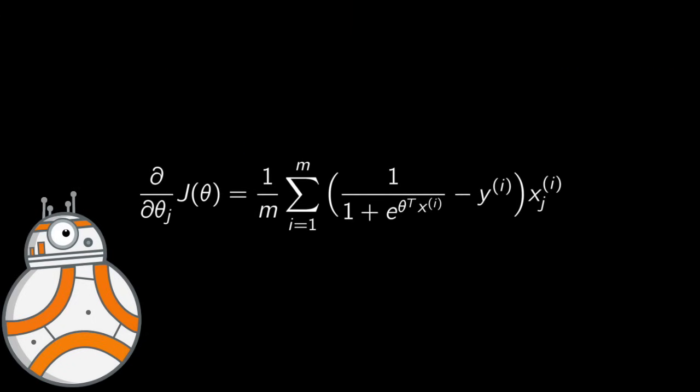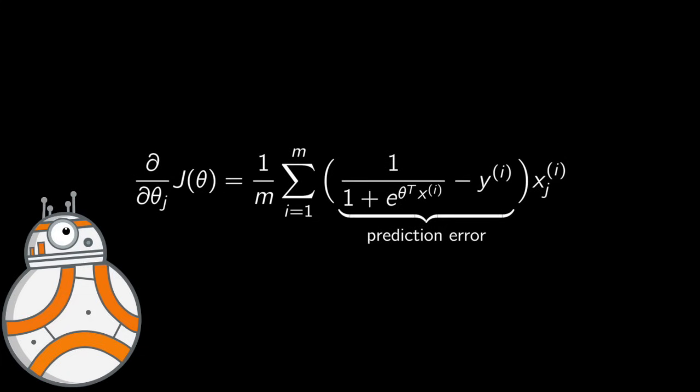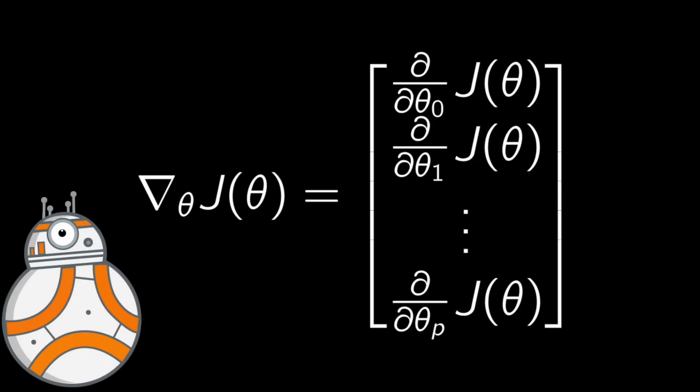Now that we have this partial derivative, for each instance or training vector xi, we could compute the prediction error. This is the error term, which then is multiplied by the feature xj, and then we compute the average of all such terms.